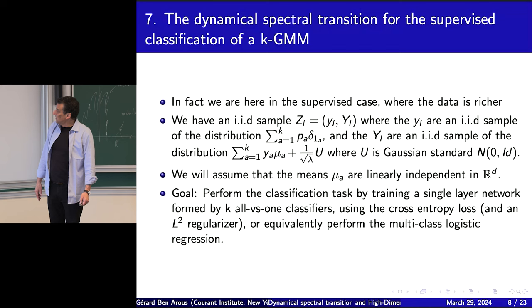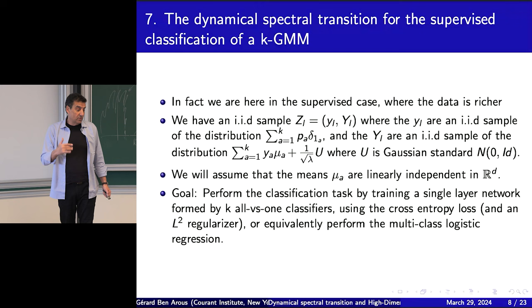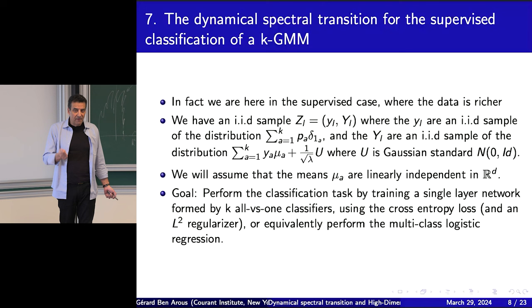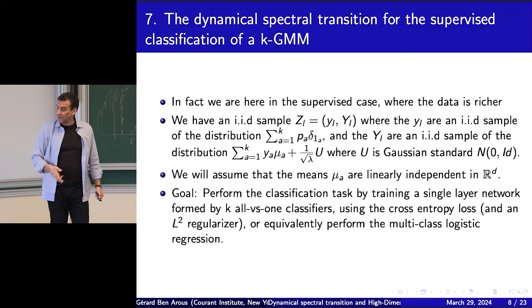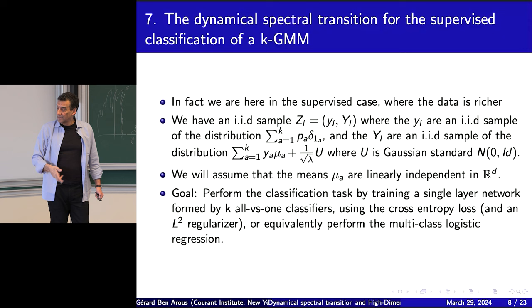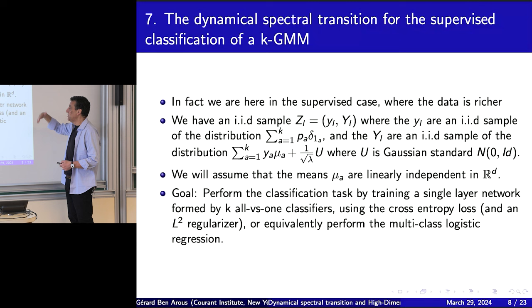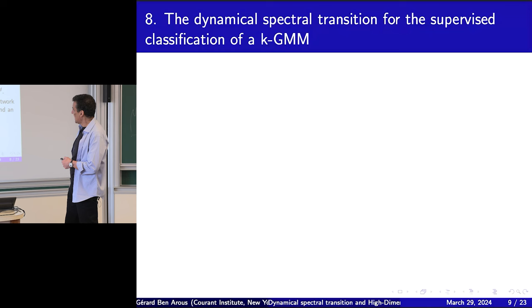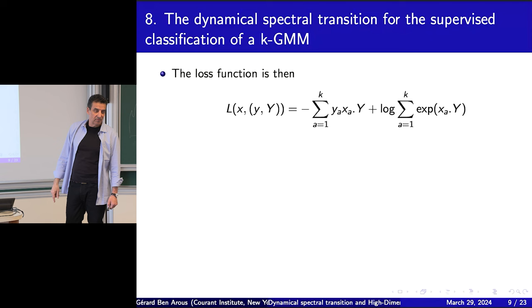We do this by a single hidden layer network — the all-versus-one approach — using the cross-entropy loss and an L2 regularizer, equivalent to doing multiclass logistic regression. The loss function involves the log-sum-of-exponentials from the cross-entropy loss. The parameter X is in R^{d×K} — a concatenation of x_a for a=1 to K, each x_a in R^d. You take the inner product with Y, add the L2 regularizer to force stability.